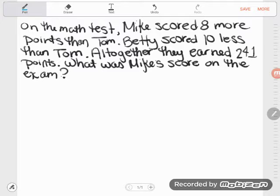So first of all, a lot of students are like, how do I know this is an algebra word problem? Here's how I know it's an algebra word problem, something that's going to require me to write an equation. I see that Mike scored 8 more points than Tom. So Mike's being compared to Tom. And I see Betty scored 10 less than Tom. Betty's also being compared to Tom.